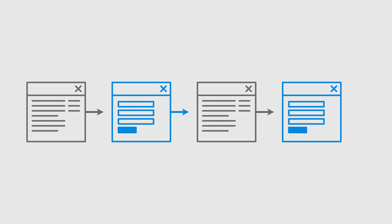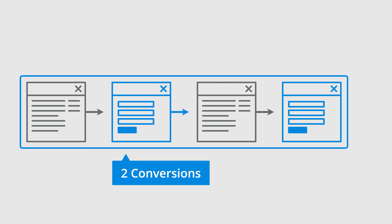The default method for counting conversions in GA4 is event-based. This means that each time the same conversion event is triggered, another conversion will be counted. So in this example, there would be two conversions counted in our reports.